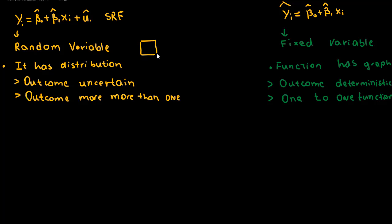For an example of a random variable, consider a dice. A dice has six sides, and when we roll it the outcome might be one, two, three, four, five, or six. Before rolling, we don't know which outcome will come — the outcome is uncertain and can be more than one value. These are the conditions that make rolling a dice a random variable.